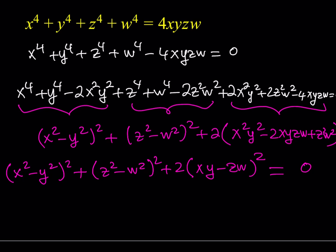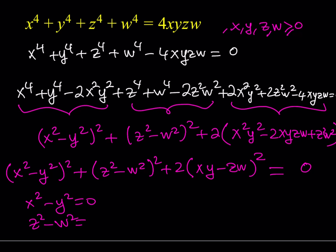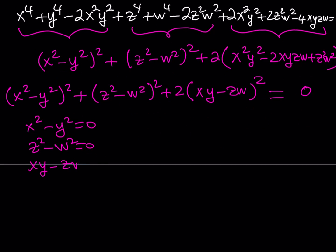Isn't that beautiful? We have zero on the right-hand side and on the left-hand side we have a sum of squares. We're looking for real solutions, and x, y, z, w are all positive — or at least non-negative. Since the sum of squares in the real world equals zero, every individual square must be zero — no square can be negative. This implies: x squared minus y squared equals zero, z squared minus w squared equals zero, and xy minus zw equals zero.